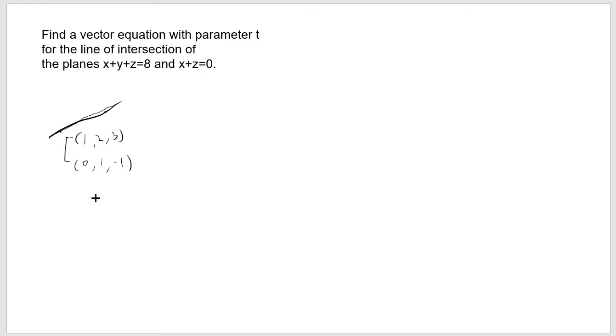Well one thing you can do is you can subtract and that gives you 1, 1, and 4. And because this is like terminal minus initial, if this point is 0, 1, negative 1 and this point is 1, 2, 3 then the vector is given by 1, 1, 4. So this is your direction of the line, your direction vector.